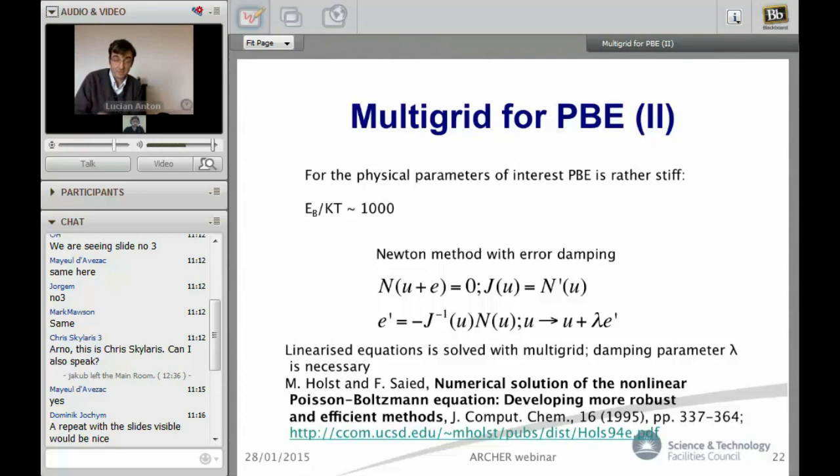Reading again through the literature and talking to more educated people, we figured out the only way to go around this is to use the Newton method. Multigrid can be used to solve the linearized equation in the Newton method. There is one more trick - you have to damp the error because of that widely varying potential.